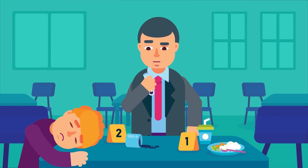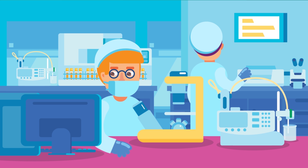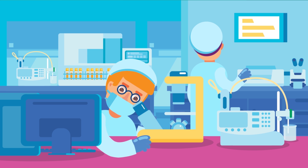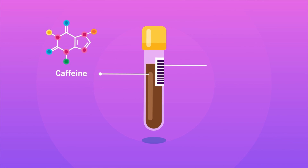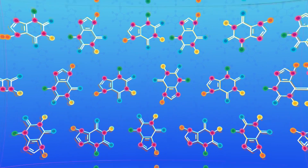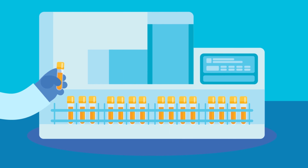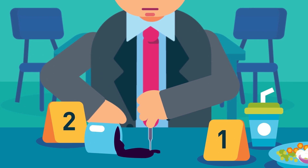Ever watched a mystery series in which the detective recovers an unidentifiable sample from the scene of the crime and runs it through a series of tests? This is what comes in analytical chemistry. Analytical chemistry is the study involving how we analyse the chemical components of a sample. For example, how much caffeine is there in a cup of tea? Are there drugs in an athlete's urine samples? Examples of areas using analytical chemistry include forensic science, environmental science and drug testing.